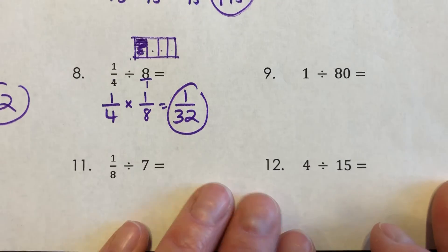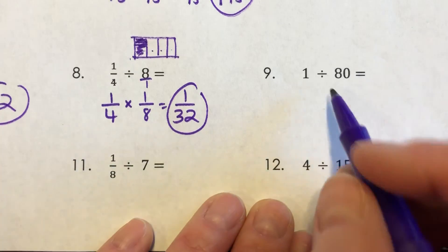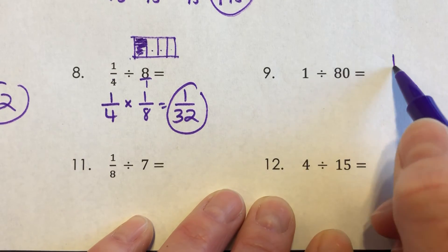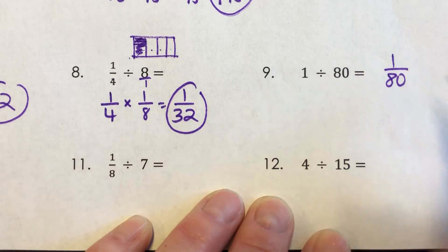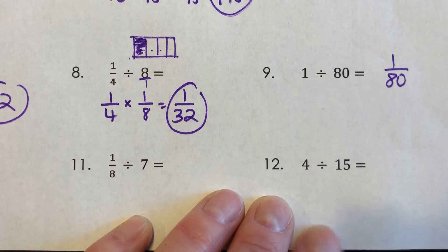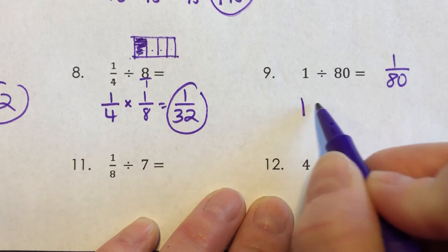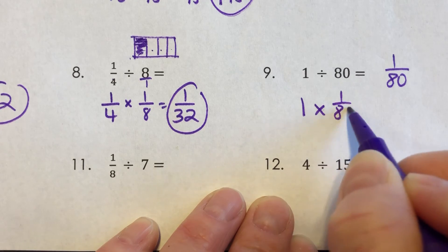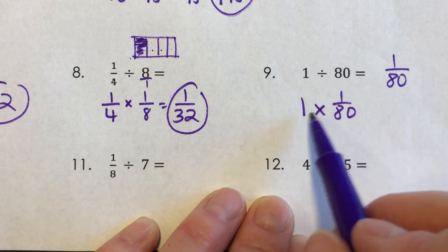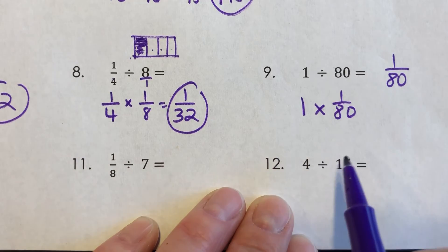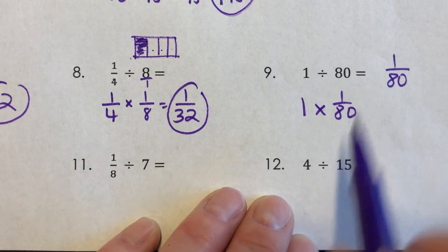For number nine, one divided by 80. Now maybe you're just thinking, well, one divided by 80, that's just one over 80. Because that means one divided by 80. That is just fine. The multiplication problem you're actually solving, the inverse would be one times one over 80. And yeah, if you have one times one over 80, one times anything is that other number.